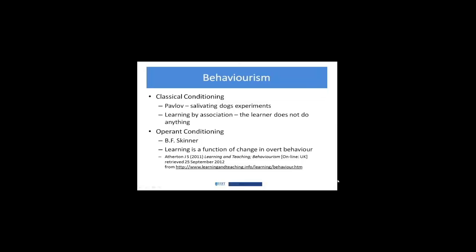The other type is operant conditioning, which stems from the work of Pavlov and others. The person generally associated with this is B.F. Skinner. Basically, when something emits a behavior and the consequences of that behavior are reinforcing, it is more likely to do it again. Anyone who has worked with small children or animals knows you can make this happen, sometimes in your favor. In Skinner's mind, learning is really about an increased probability of a behavior based on reinforcement to create a new behavior — learning becomes a function of change in overt behavior.